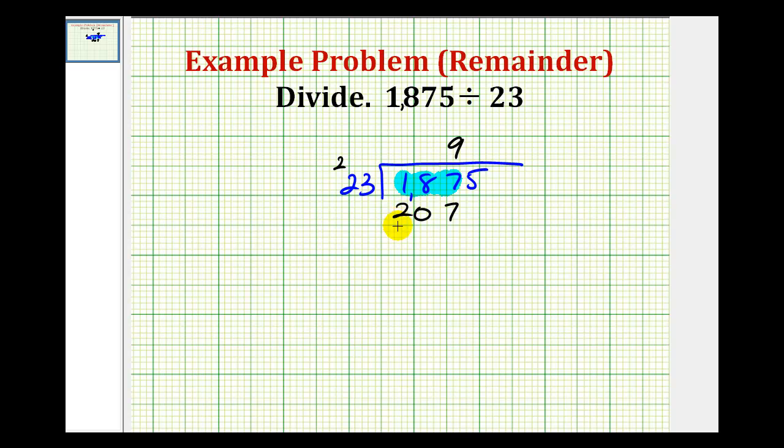There's no reason to panic because it didn't work the first time. We'll go ahead and try an eight now. Eight times three would be 24, carry a two. Eight times two is 16 plus two, that gives us 18.